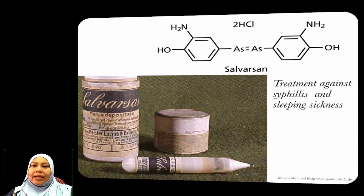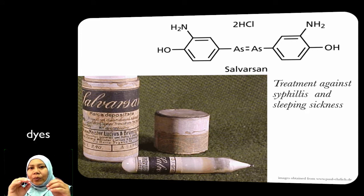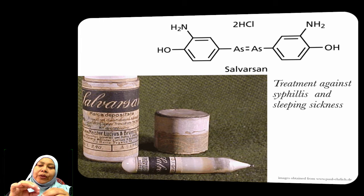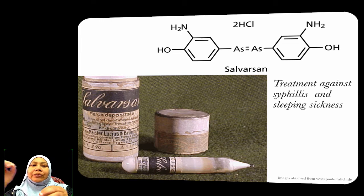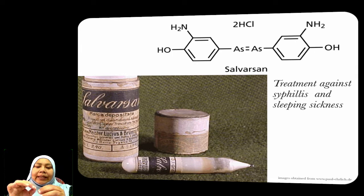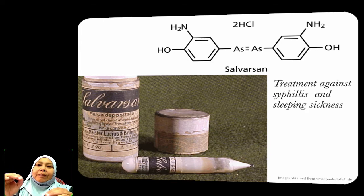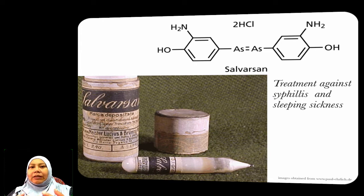Paul Ehrlich was actually a medical doctor, a physician. He loved playing about with dyes, and what he noticed is that certain dyes would color certain parts of a cell, while certain dyes would not color other parts of the cell. With this idea, he was thinking of a magic bullet — certain compounds would target certain parts of a cell or tissue but wouldn't disrupt other parts. He came up with the concept of chemotherapy.